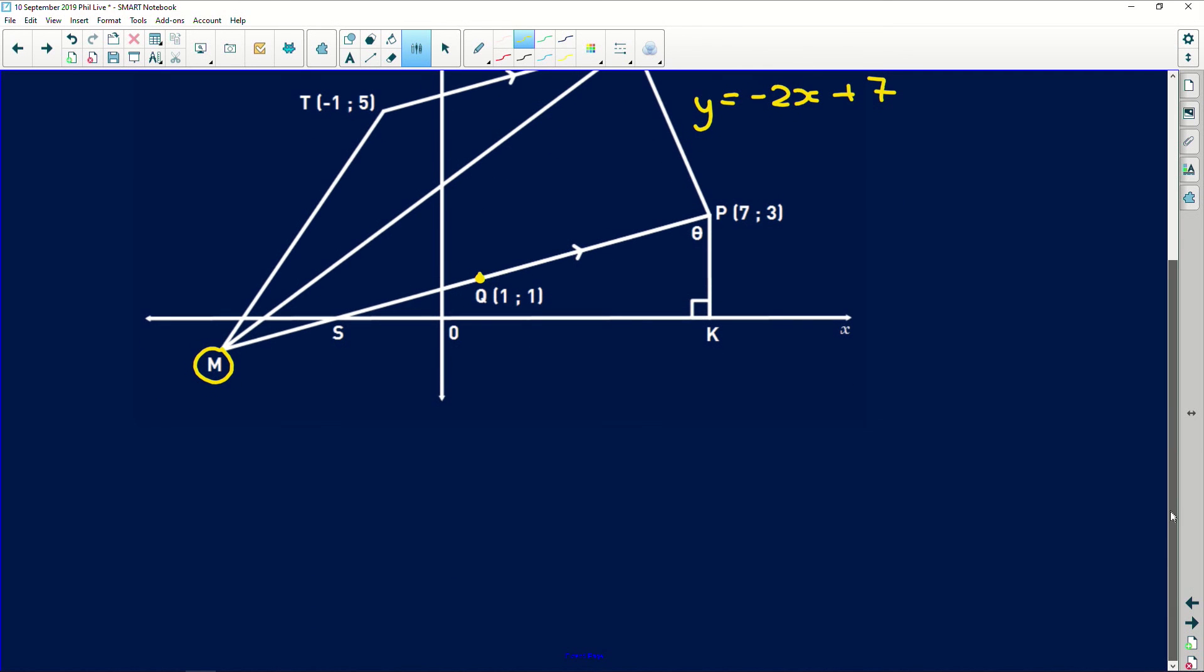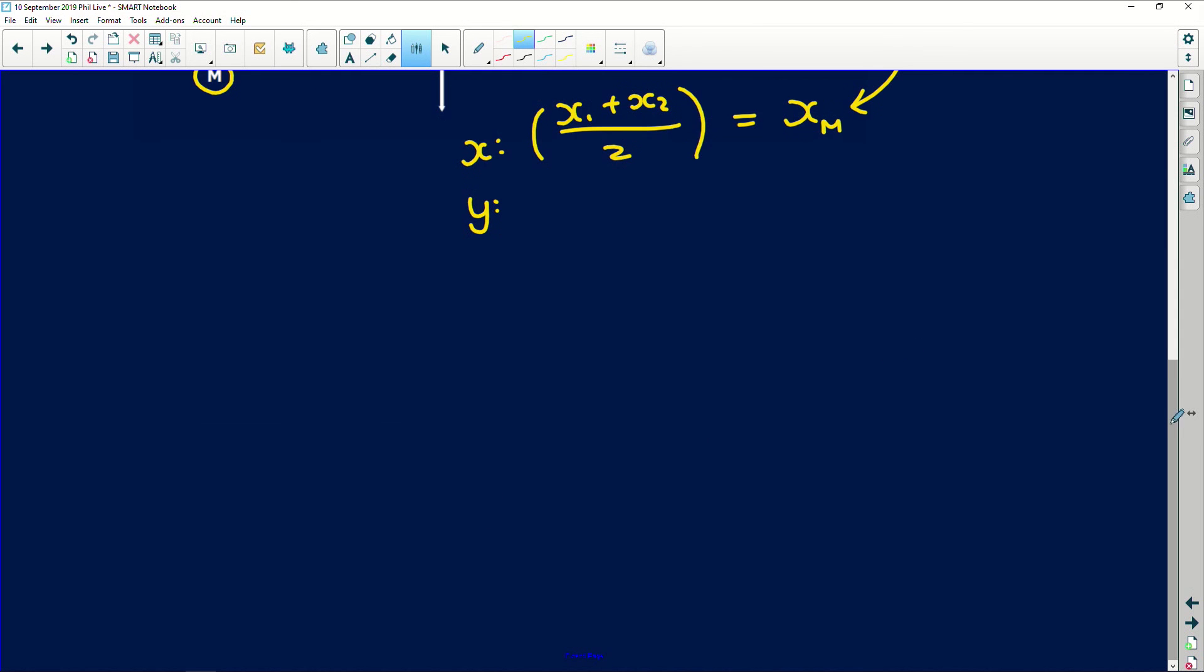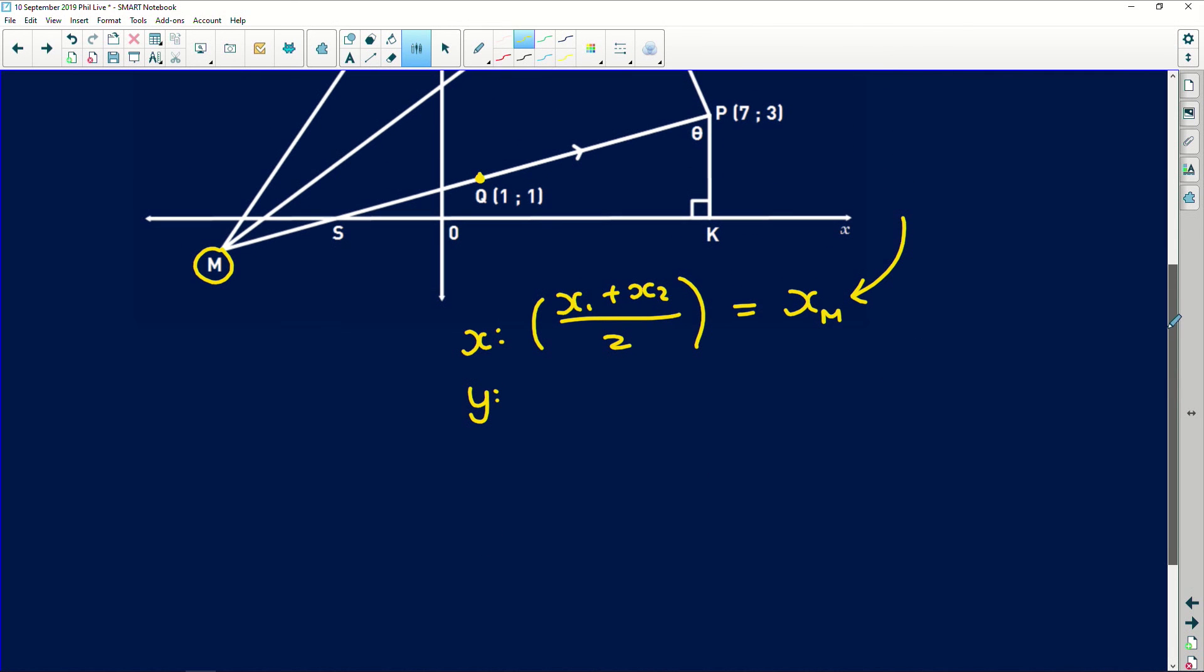That doesn't help us anyway, but we were told that Q is the midpoint of line MP. Remember when you do the midpoint, you deal with the X and Y values. You say X1 plus X2 divided by 2 and that gives you the midpoint value. Same thing you do with Y values. Here we've been given the midpoint value. So that goes into this over here. Let's deal with X first.